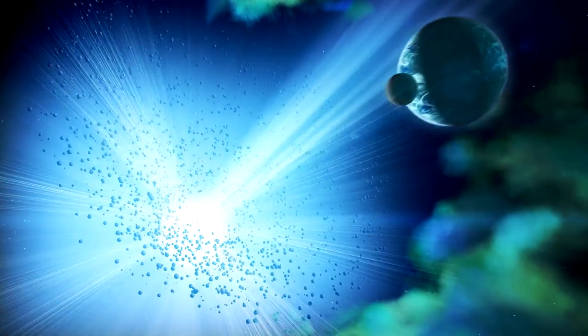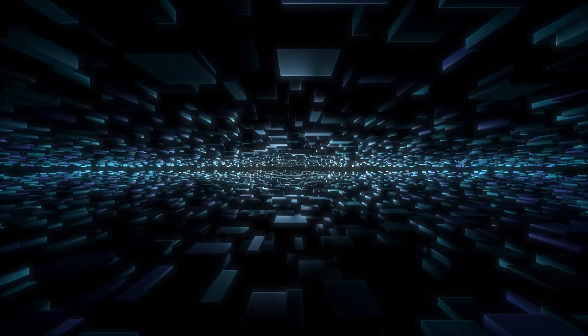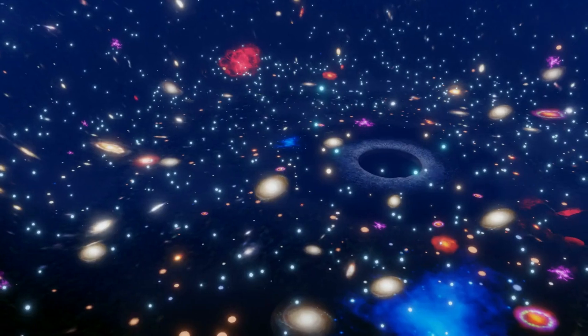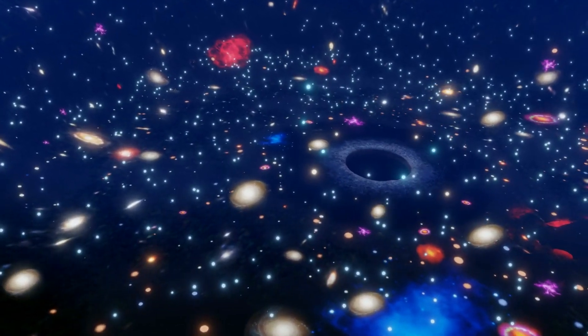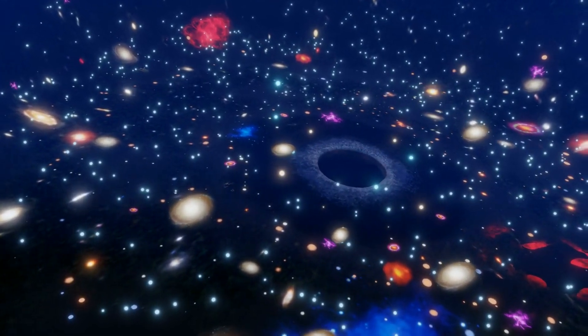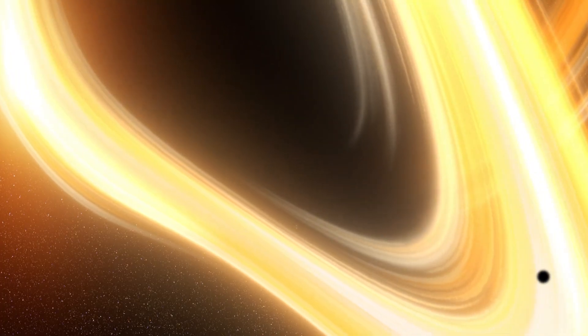The event horizon is essentially the boundary of the black hole. Anything that crosses this boundary is doomed to fall into the black hole, never to be seen or heard from again. But what's truly fascinating about the event horizon is that from the outside, it appears as a sphere of perfect blackness. It's the ultimate cosmic abyss.